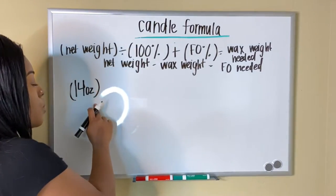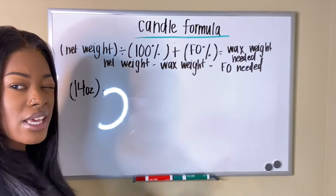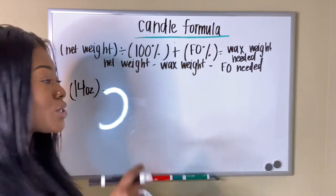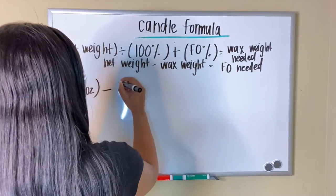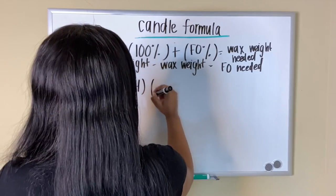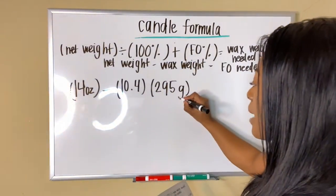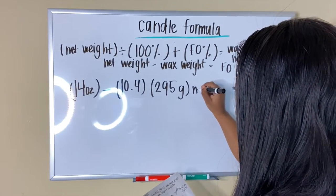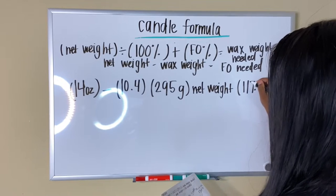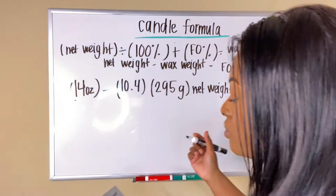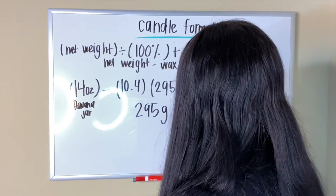First up: the 14-ounce Havana jars. I do not fill these to 14 ounces — I fill them to 10.4 ounces. I know that can be confusing when I refer to the jar name versus the fill amount, so I just want to clarify that. Filling to 10.4 ounces gives us 295 grams — that's our net weight. I convert everything from ounces to grams. I'm going to use an 11% fragrance oil load for this jar.